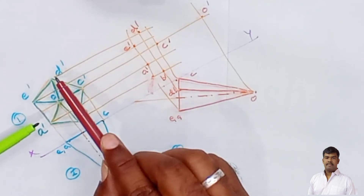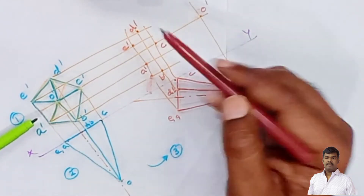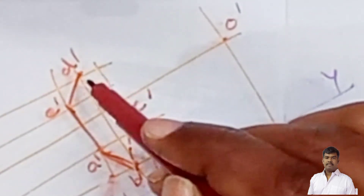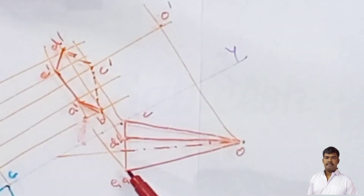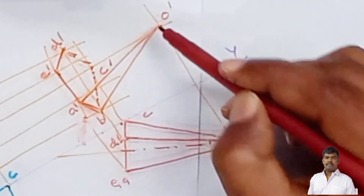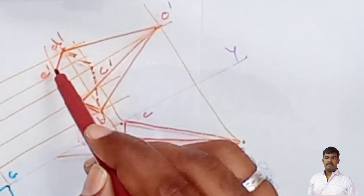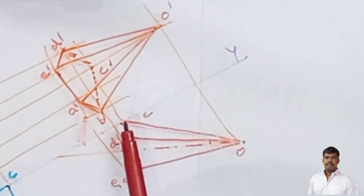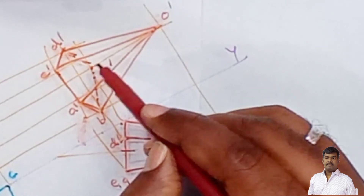From the front view, the visible edges are d-to-e, e-to-a, and a-to-b. The edges b-c-d are invisible. For the slant edges: o-a, o-e, o-b, o-d, and o-e are visible. The slant edge o-to-c is invisible since it faces away from the observer.